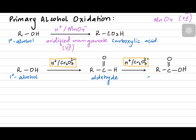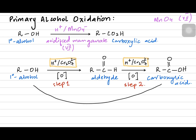Manganate can produce acid in one step, but dichromate produces acid after two steps. Oxidation is happening in both steps, which is why we write [O] — square bracket O means oxidation. Step one makes the aldehyde, and step two converts the aldehyde into carboxylic acid. We can also perform the same reaction in one step even with dichromate, by using acidified dichromate to make the acid directly.